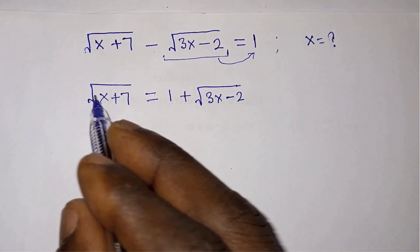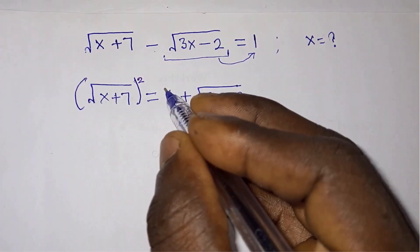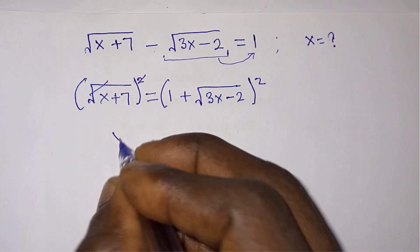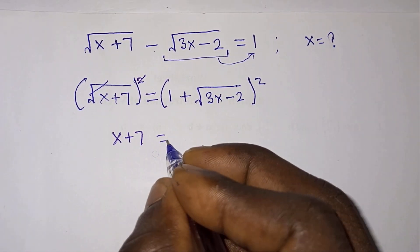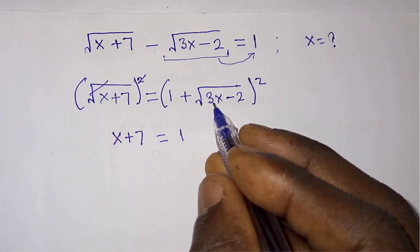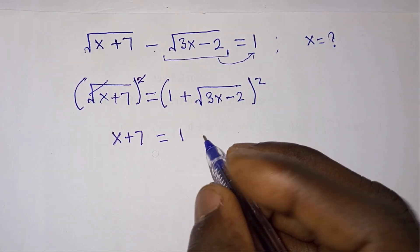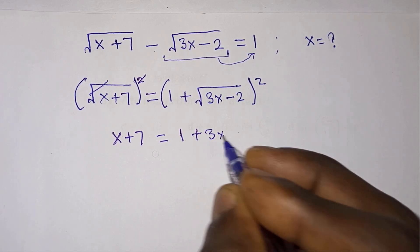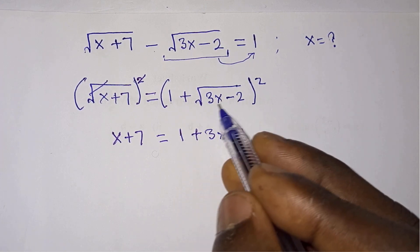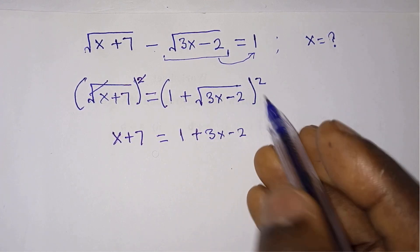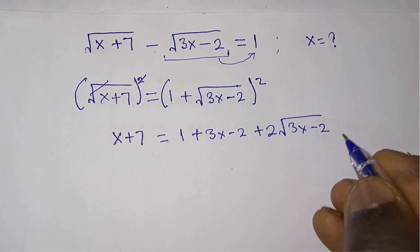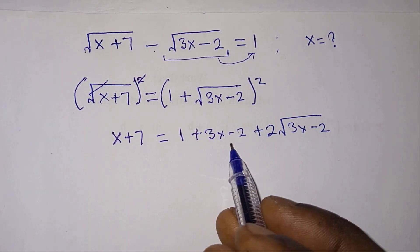The next thing we will do is eliminate this square root by raising each side of the equation to the second power, so that the square will cancel the square root. We have x plus 7 is equal to — let's expand this: 1 squared is 1, then square root of 3x minus 2 squared gives us plus 3x minus 2, then 1 times square root of 3x minus 2 times 2 gives us plus 2 square root of 3x minus 2.